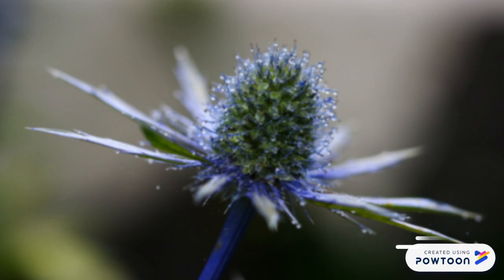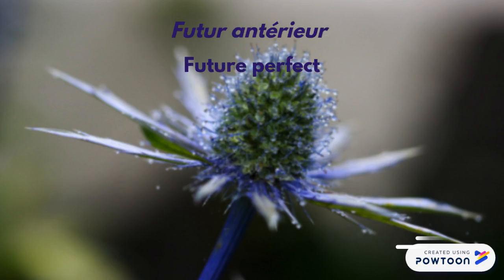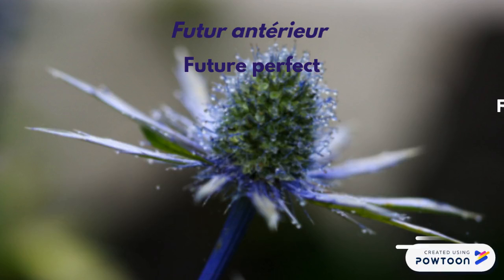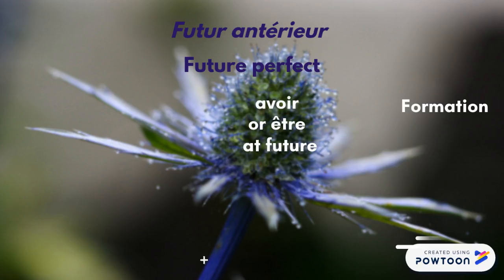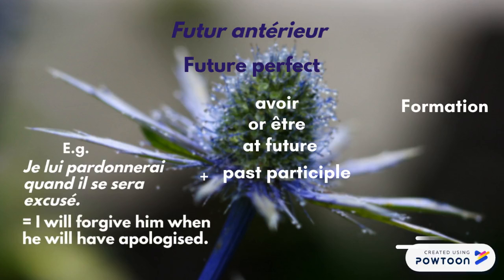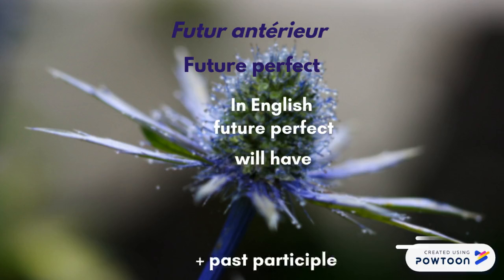Let's move on to the future with the futur antérieur, or future perfect tense. The futur antérieur indicates a future action that will take place before another future action. To form it, you conjugate the auxiliary avoir or être at the future and add the past participle of the verb. For instance, je lui pardonnerai quand il se sera excusé — I will forgive him when he will have apologised. We translate it in English with the future perfect: will have plus past participle.